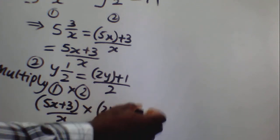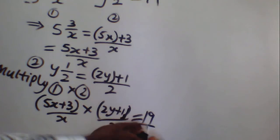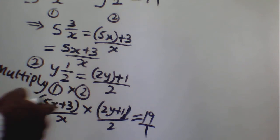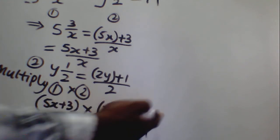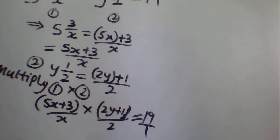So here we have: 5x plus 3 over x, times 2y plus 1 over 2, which is equal to 19. At this point, we know that any number divided by 1 is also the number. With this knowledge, we now proceed to solve it — the numerator will be equal to the numerator, and the denominator will be equal to the denominator.